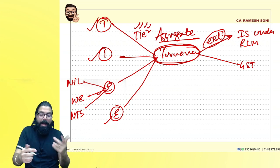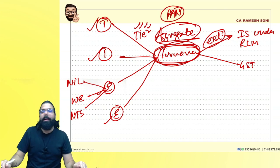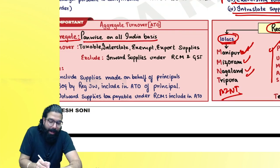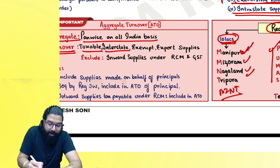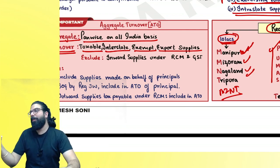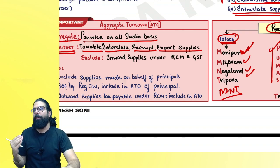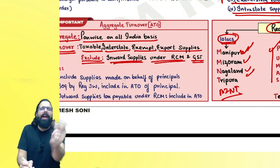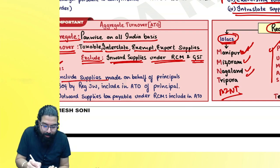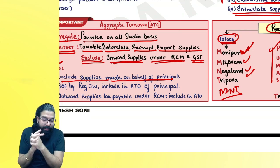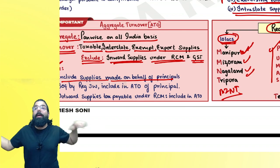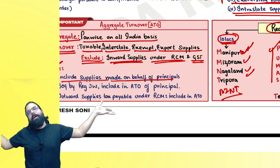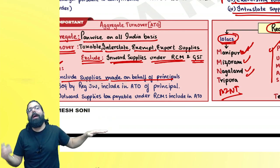Turnover in state refers to the statewide turnover; aggregate turnover means PAN-wise, all-India basis turnover. Always remember: inward supplies under RCM are excluded, and GST is excluded. Include supplies made on behalf of principal only if you are the one issuing the invoice — if the principal gives the invoice, it is the principal's turnover. Whoever gives the invoice, it is their turnover.